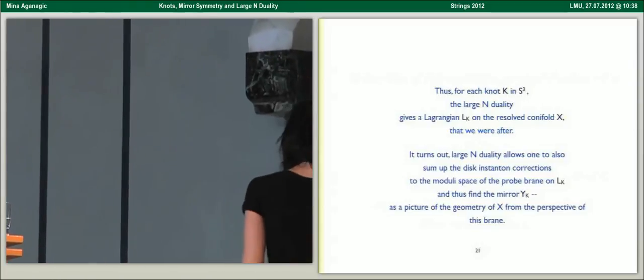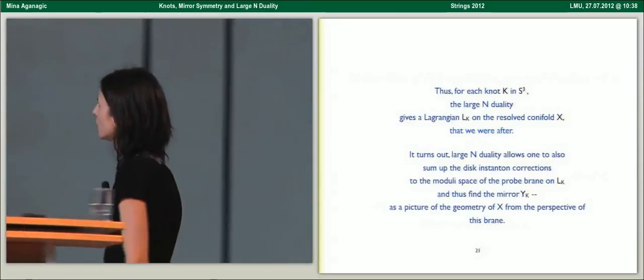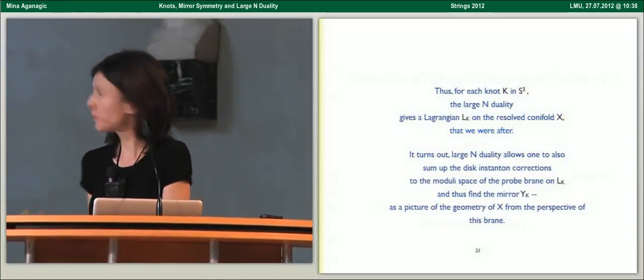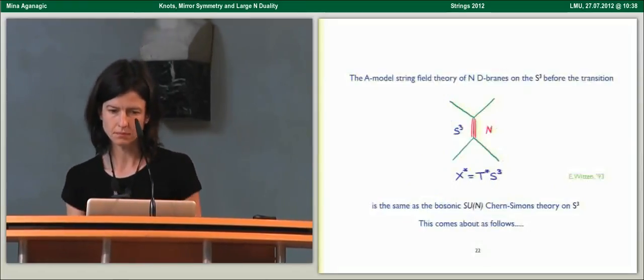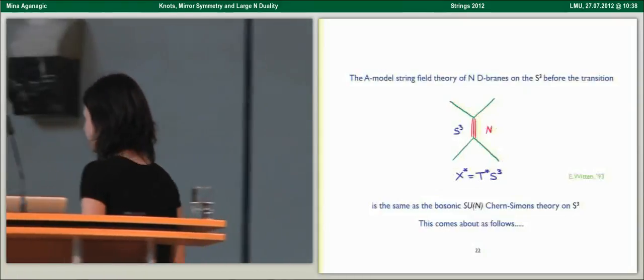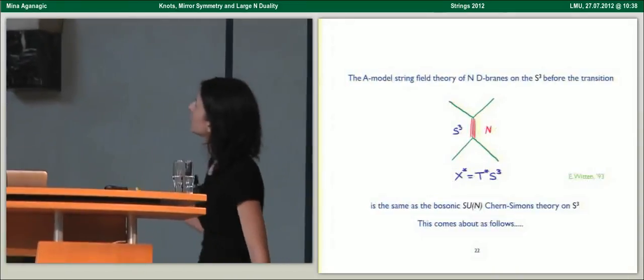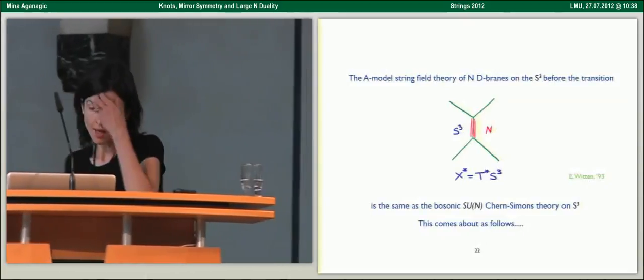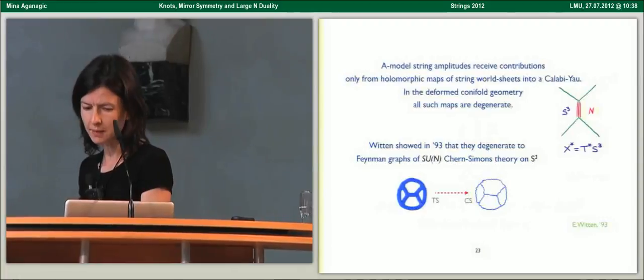The duality also allows you to sum up disk instanton corrections to the moduli space of the probe brane and thus find a mirror as a picture of the geometry from the perspective of this brane. The reason that's doable is the relation of the A-model topological string on the deformed conifold to SU(N) Chern-Simons theory on S3.